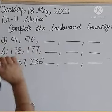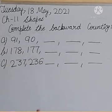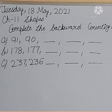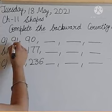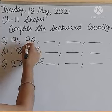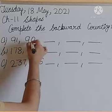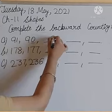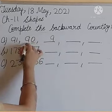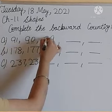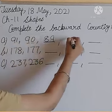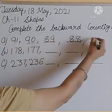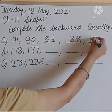How do we do backward counting? We look at what comes before. Let us start: 91, 90. What comes before 90? What comes before the digit 0? Nine. What comes before 9? Eight — so 89. And before 89? 88. What comes before 88? 87.